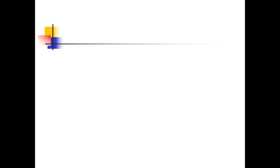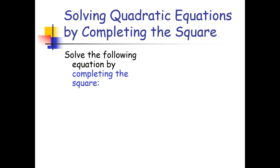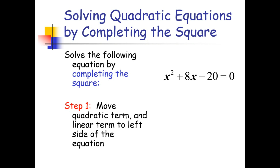Now let us go to our discussion: solving quadratic equations by completing the square. We will solve x squared plus 8x minus 20 equals 0. Step 1: move the quadratic term and the linear term to the left side of the equation. Our x squared and 8x are already on the left side, so we just transpose the minus 20 to the right side, giving us x squared plus 8x equals 20.